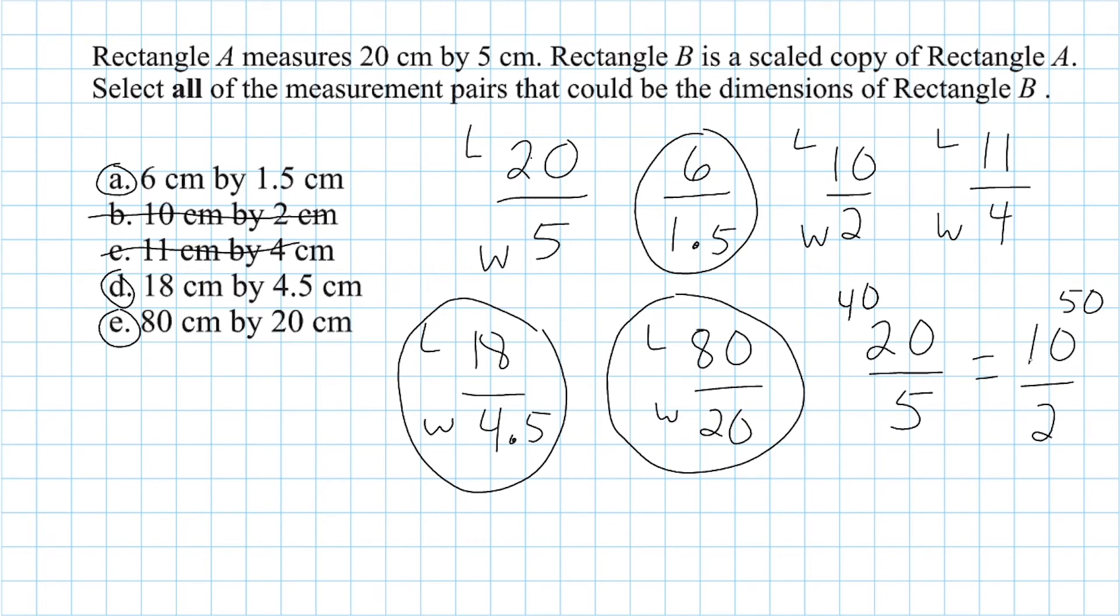And if we did the same thing with 11 over 4, that would not be proportional, but it would be proportional with option D and option E.